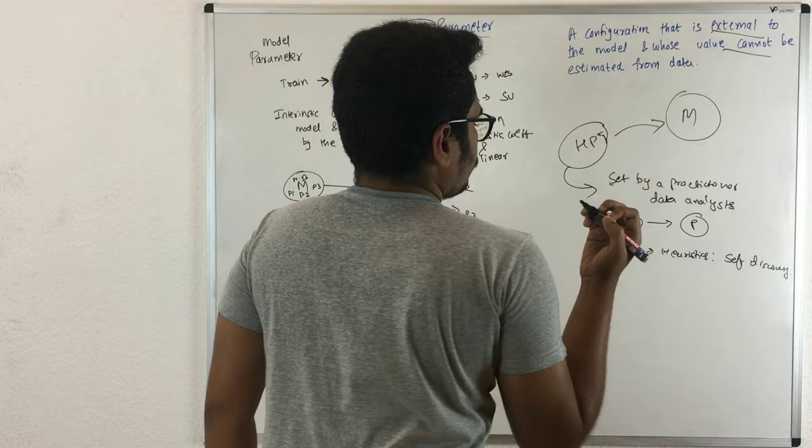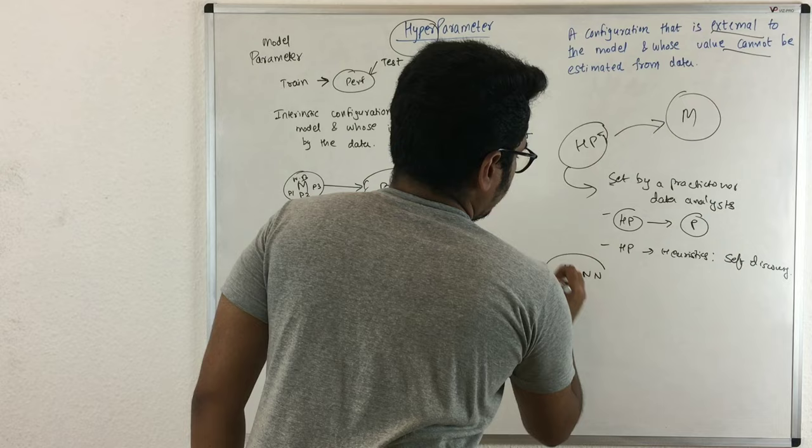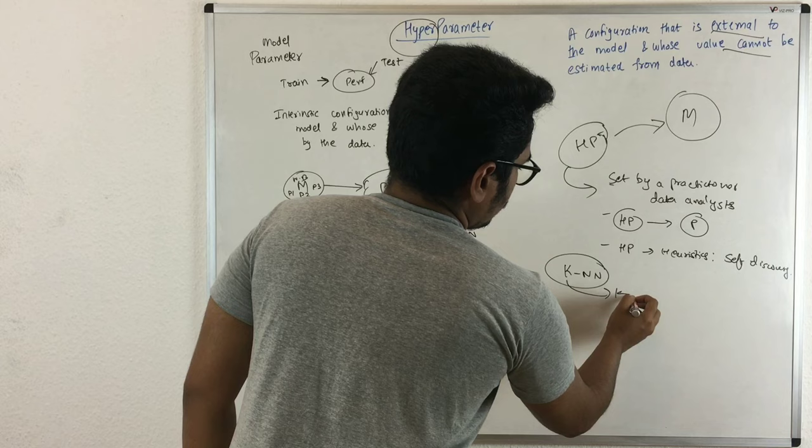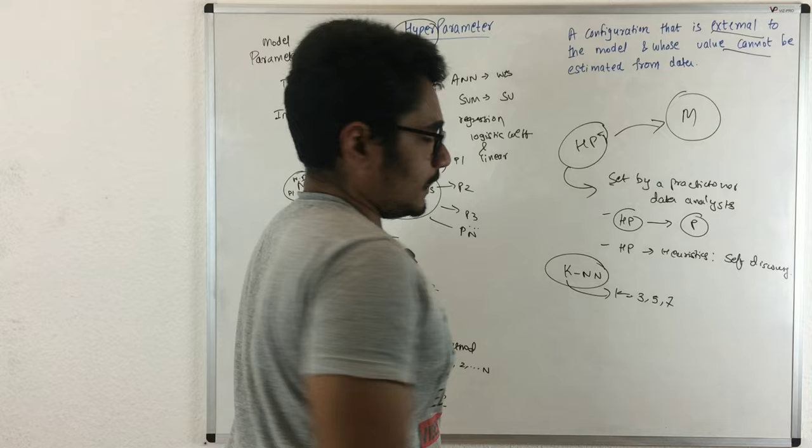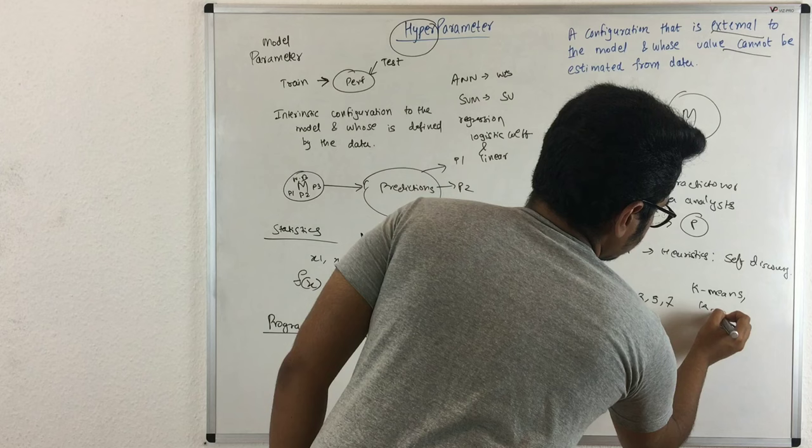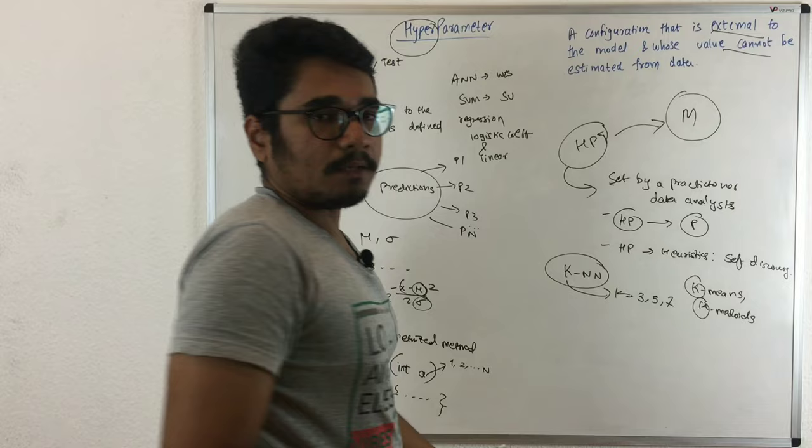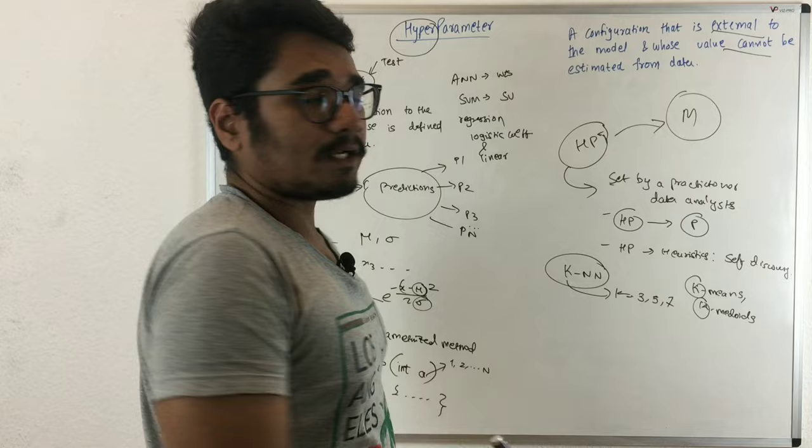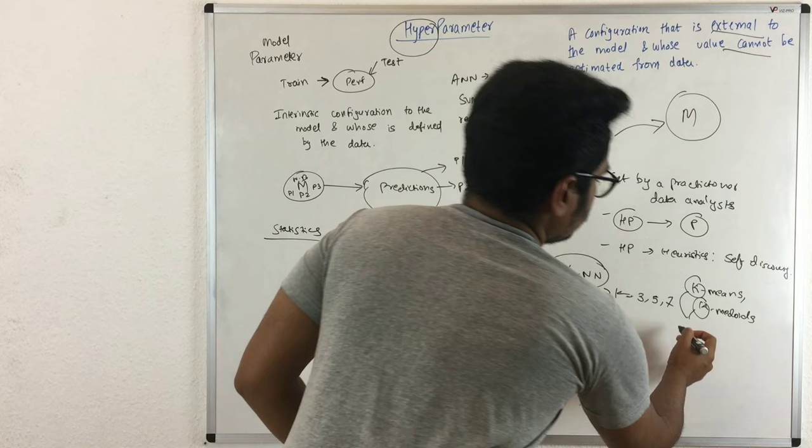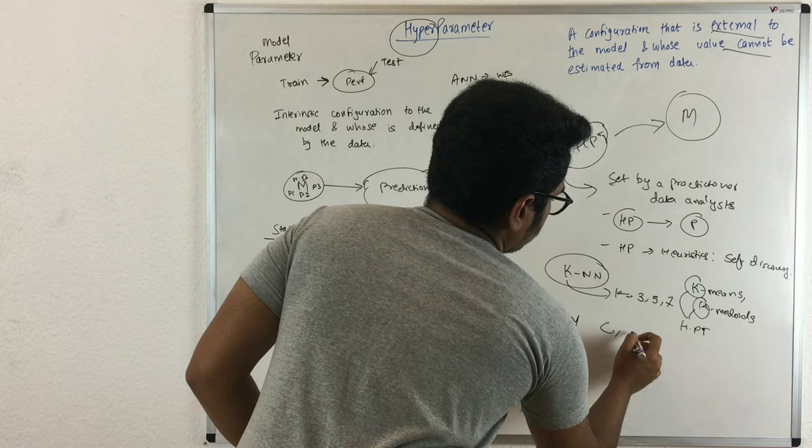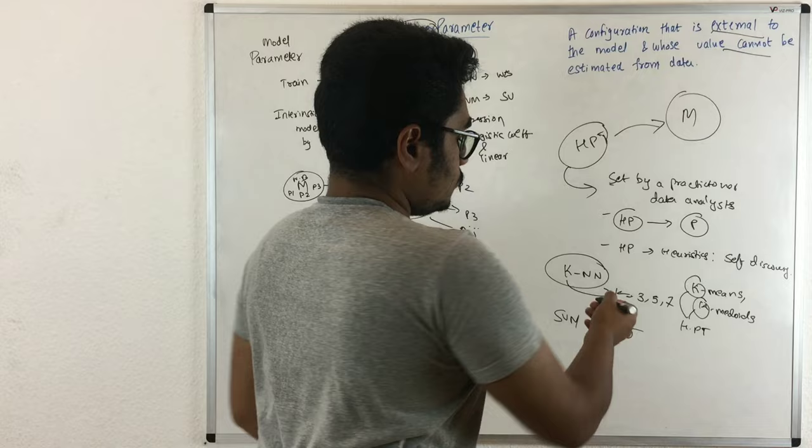Where in machine learning are hyperparameters used? In the K-nearest neighbors model, we define the value of K - like 3, 5, or 7 - which determines the number of nearest neighbors. In clustering algorithms like K-means and K-medoids, you define the number of clusters you want. In support vector machines, we have parameters like C and Sigma, which are hyperparameters you set externally.